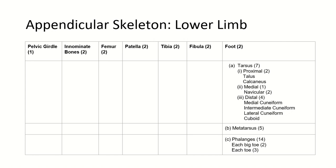The proximal tarsal bones are talus and calcaneus. The medial ones are navicular. The distal ones are medial cuneiform, intermediate cuneiform, lateral cuneiform, and cuboid. We have five metatarsals, and phalanges are the same as the upper limb — each big toe has two and each toe has three.